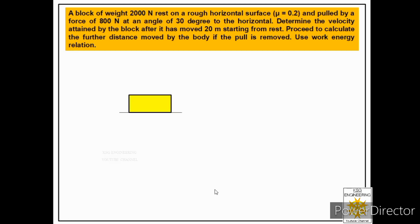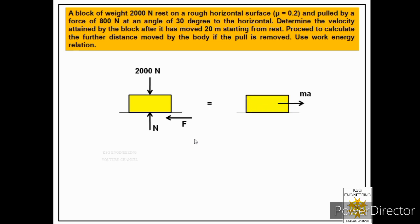We draw the free body of the block on the horizontal surface, showing the weight acting downward, the normal pressure N, and — since the pull is removed — only the frictional force acting against the motion in the horizontal direction. This is equivalent to mass times acceleration. Applying the equation summation of Fx equals ma: since only friction acts and it opposes motion, minus F equals ma, which gives minus mu_k times N equals ma.